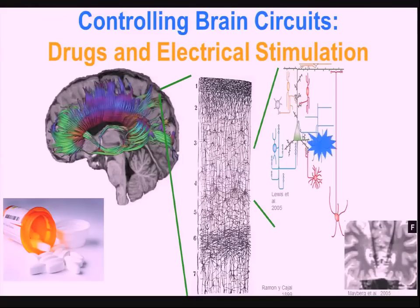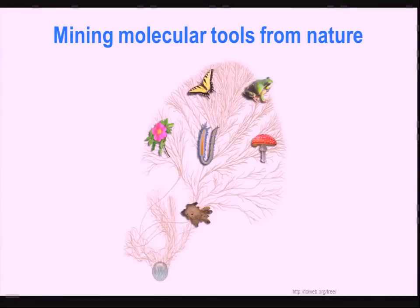What you really want to do is target a defined cell class — cells defined by their computational properties, anatomy, or by the way they are affected in different brain disorders. And since we like light, we'd love to be able to turn them on and off with light. So we went back to nature, because photosynthesis and other methods for converting light into energy exist. The brain works through electricity, so if we can convert light into electrical energy — which is essentially what photosynthesis is — then we win.